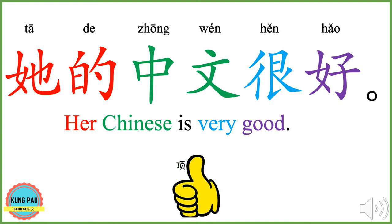她的中文很好。 她的 means her. 她 means she. 的 is a possessive particle. 中文 means Mandarin Chinese. 很 means very. 好 means good. 她的中文很好 means her Chinese is very good.